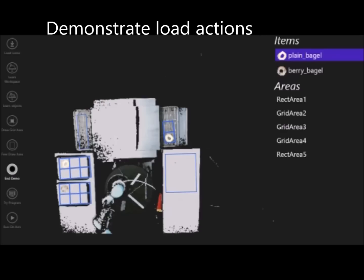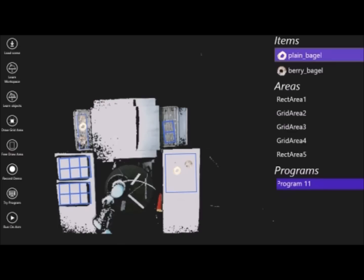Finally, the load subtask is demonstrated by dragging bagels onto the grid at the oven entrance. The learned program can be validated in the virtual environment. The scene is manually rearranged and extra virtual bagels added to check generalization. Tapping the Try Program button validates the desired behaviors.